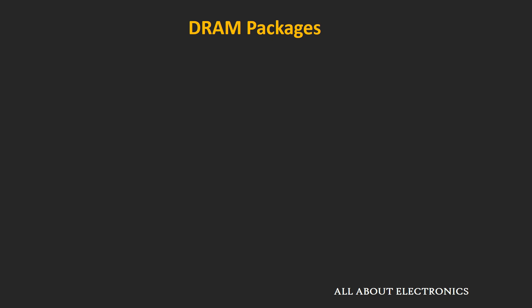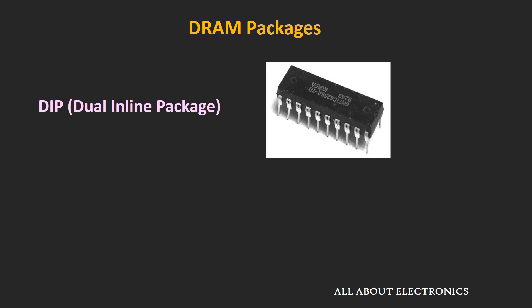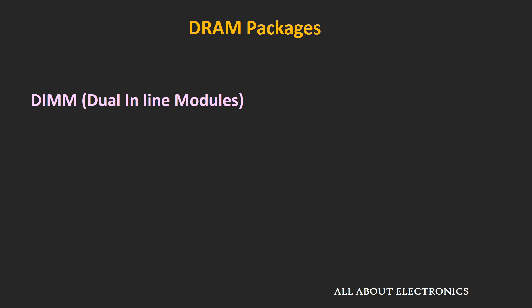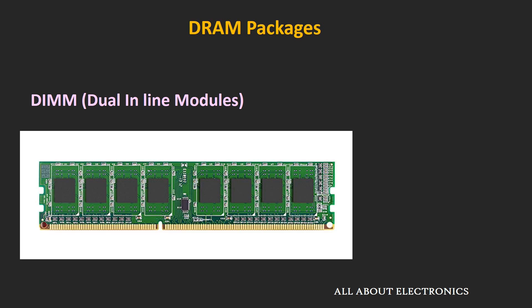Let's look at the different packages in which dynamic RAMs are available. Very old generations came in dual inline packages. Then came single inline modules, or SIMMs, where memory chips are soldered onto one PCB with pins on only one side, providing a 32-bit data bus width — so two SIMMs in parallel were needed for 64 bits. Next came dual inline modules, or DIMMs, with pins on both front and back of the PCB, providing a 64-bit wide data bus.